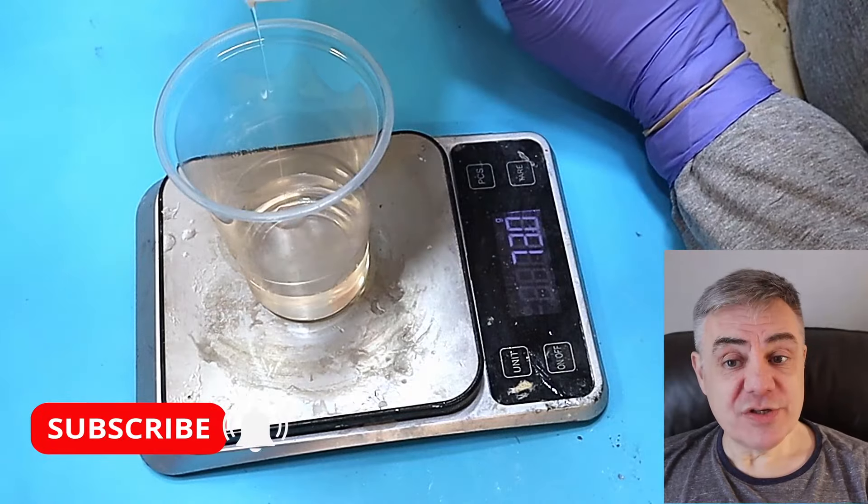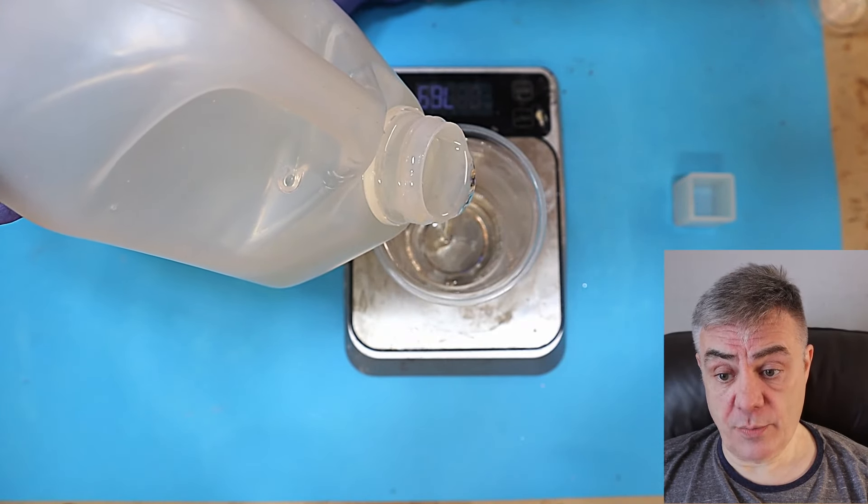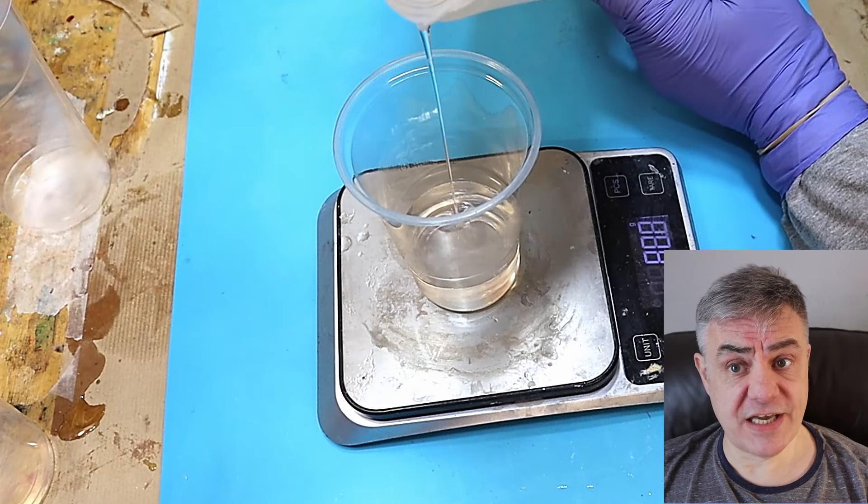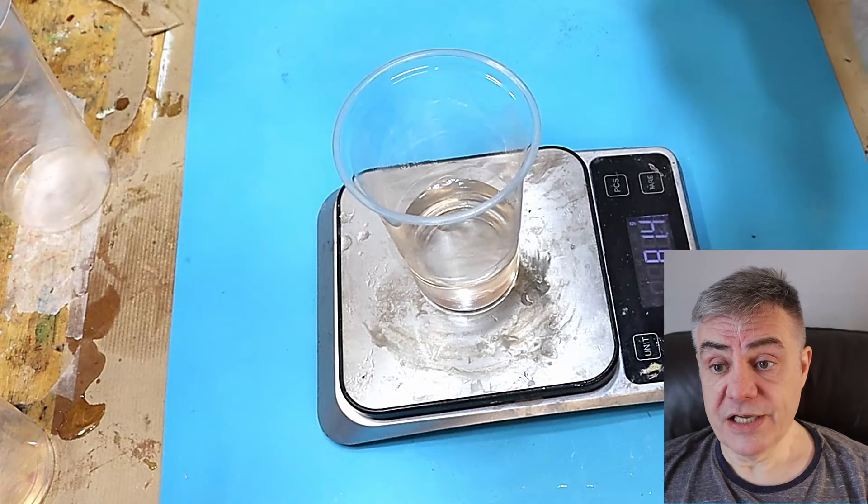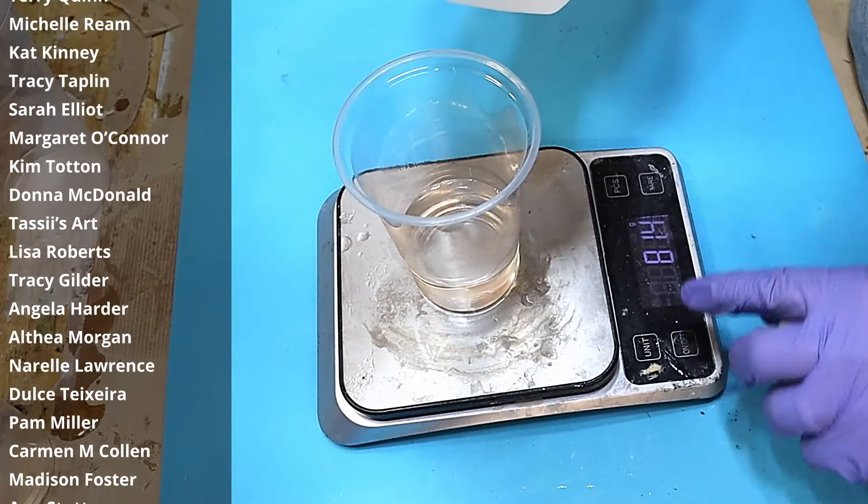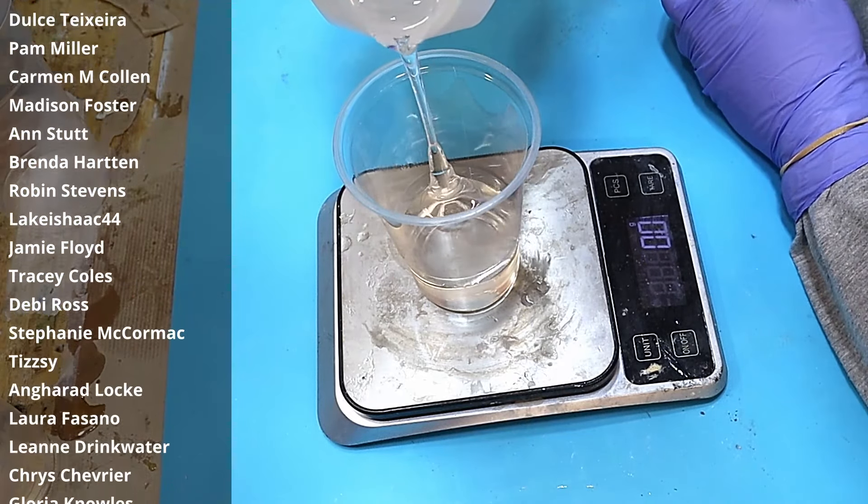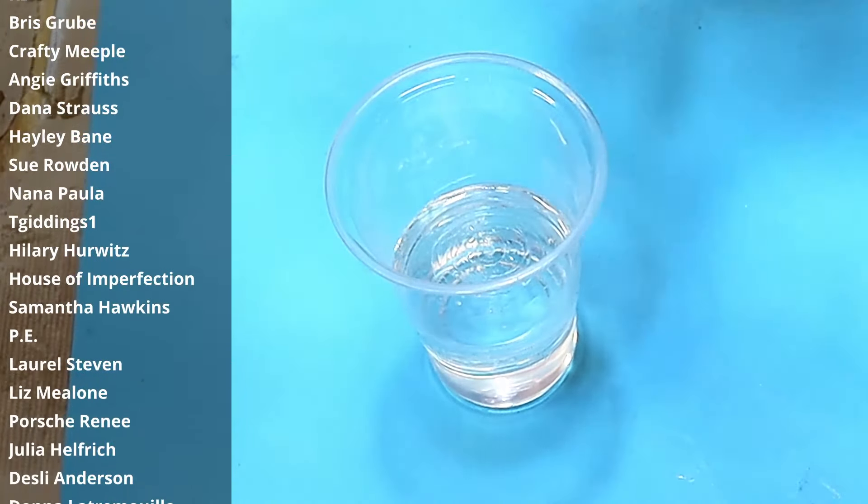So I'm mixing up my resin here. I put my part A in and now I'm adding my part B. This is a 100 to 50 mix, so I only needed to have half the amount of part B as I did with part A. It is quite a nice thick resin as well. Thank you to all my members whose names are coming up now, and if you'd like to become a member of this channel, the link is in the description below and there are lots of different perks available.